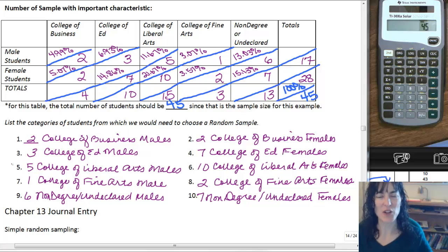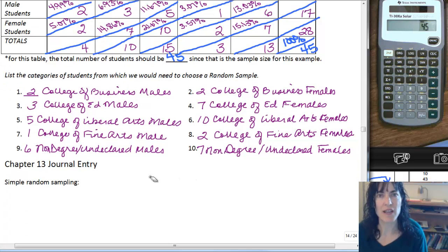Here's my list, and you can see it matches my table. I have three College of Ed males - that comes from the intersection of male students and College of Ed. Seven female College of Ed students. Five liberal arts males, ten liberal arts females, and so on. This tells me what lists I need to make from my population, and randomly choose the first however many are listed here, like the first ten liberal arts females, for all categories, to choose my stratified random sample.